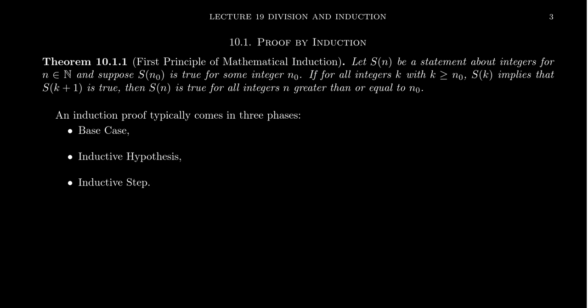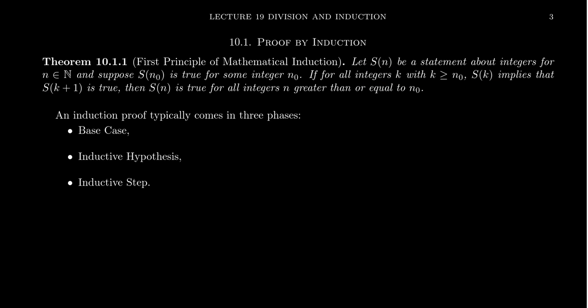We have a statement indexed by natural numbers, and we know it's true for a specific integer n₀. If for all integers k greater than or equal to n₀, S(k) implies S(k+1) is true, then S(n) is true for all integers n greater than or equal to n₀. Let me try to unravel what's going on: we have these statements about integers indexed by natural numbers, and there's some first number n₀.